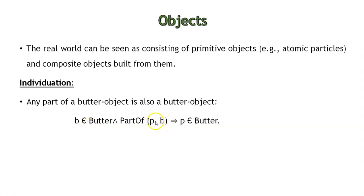If P is a part of B, then we call P also butter - P belongs to the butter category. This is how individuation is represented in case of objects.